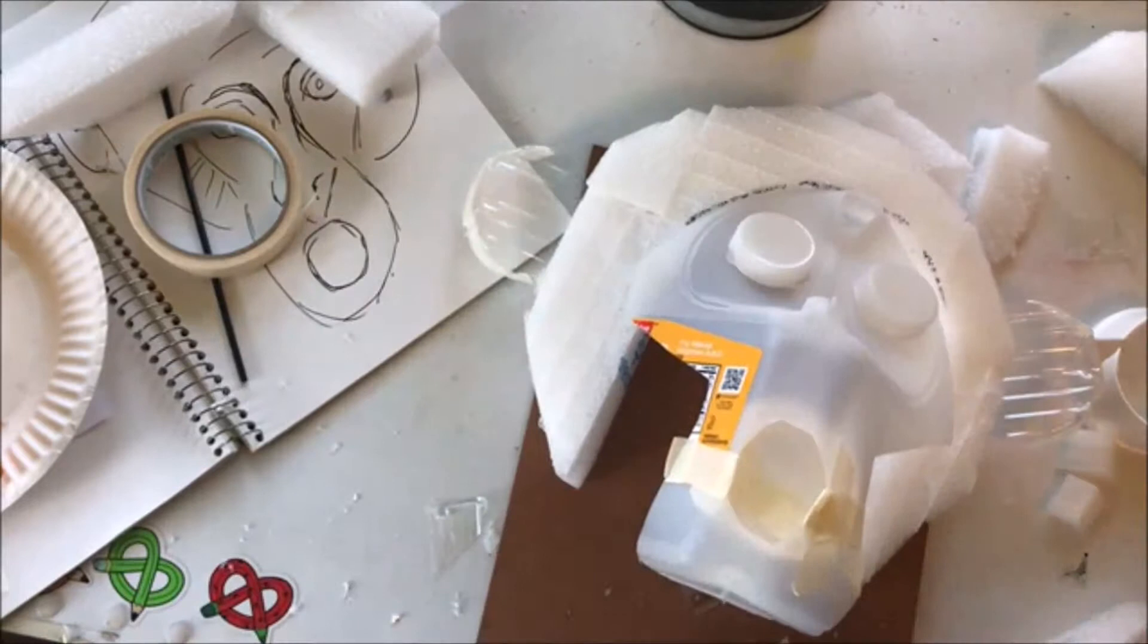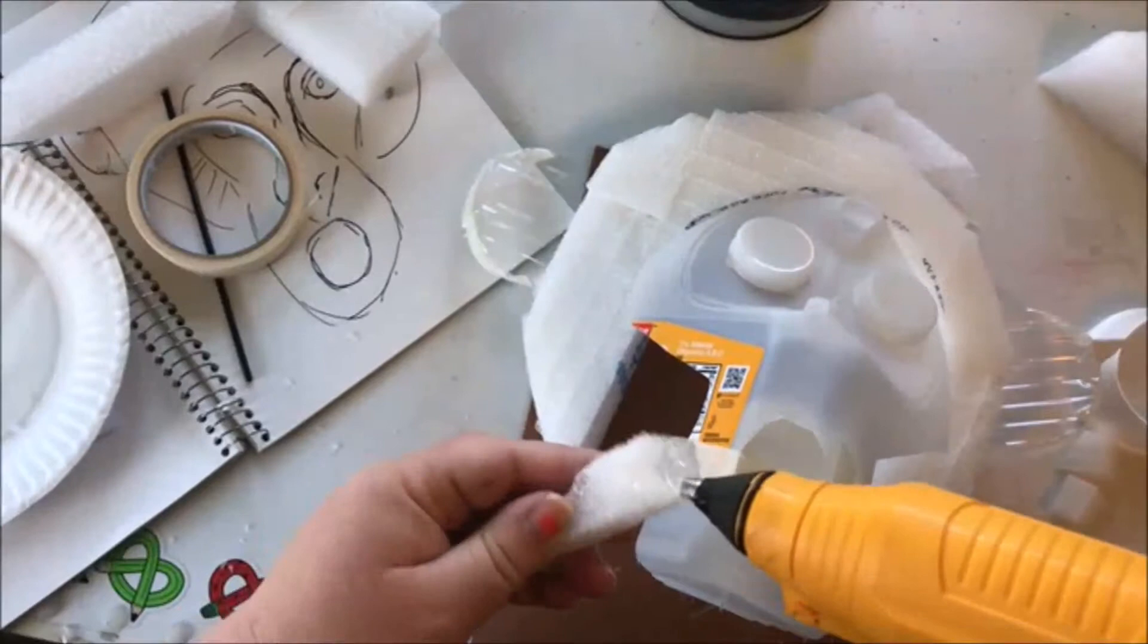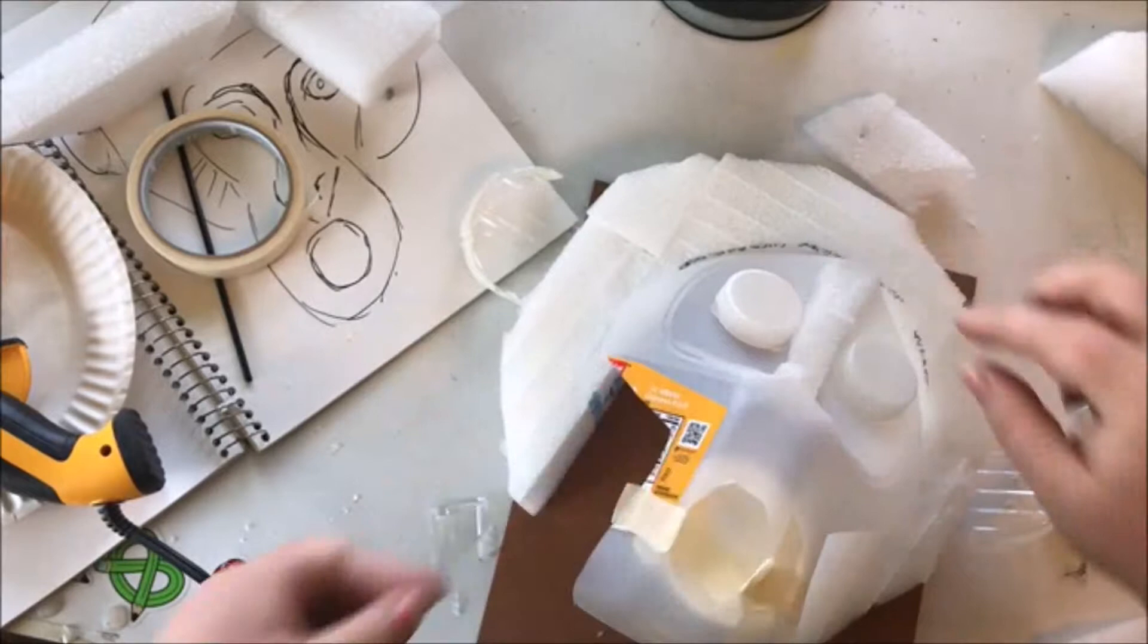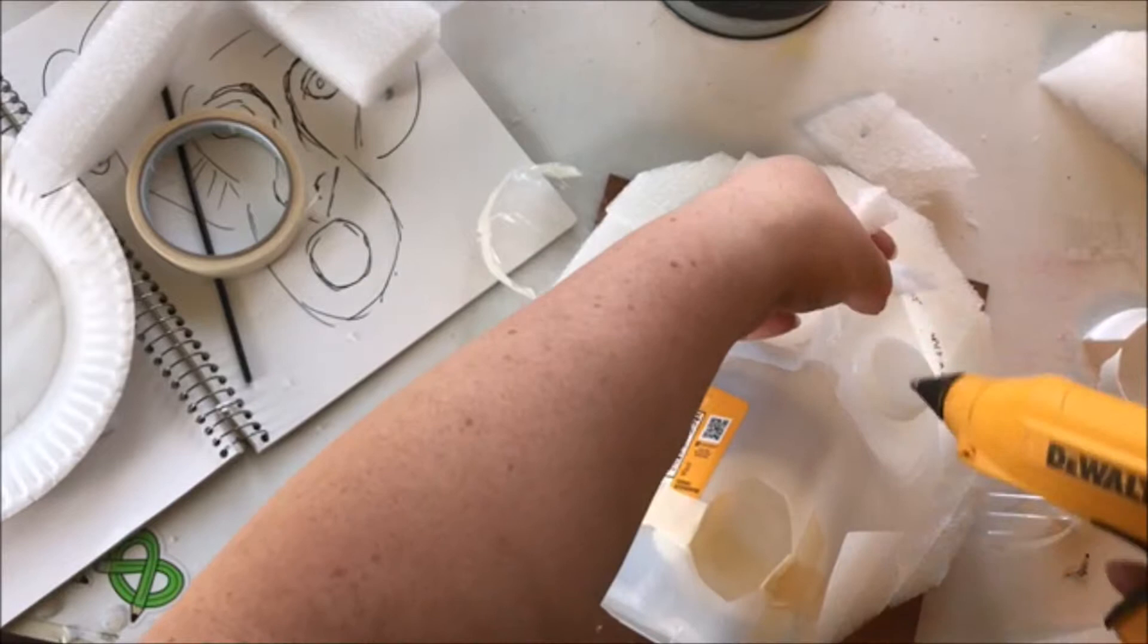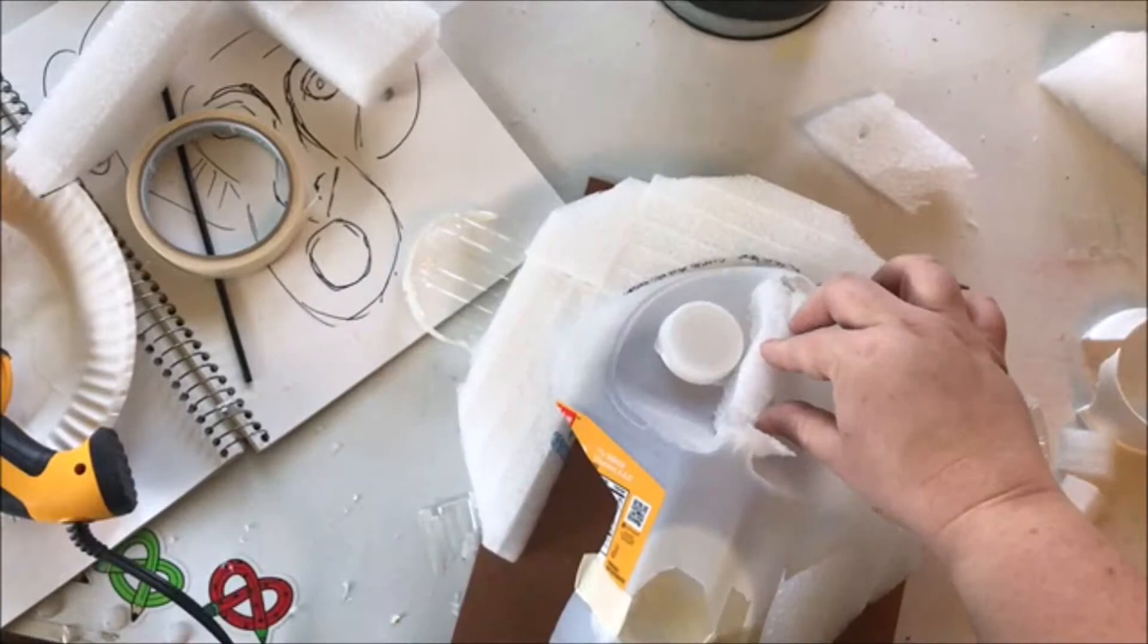One thing with the styrofoam is I can kind of mold it and cut it however I wish. A little glob fell off and it hurt - this stuff is hot. Just like I did with his head, I could kind of carve it. I've got some packing paper and stuff I can use with some Mod Podge to smooth out his face.